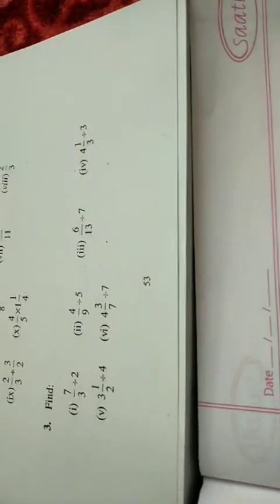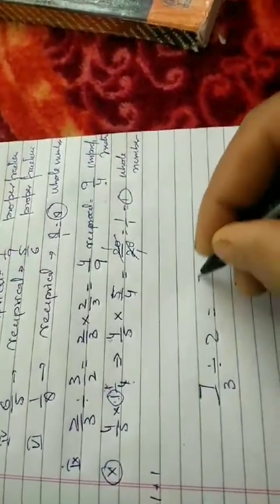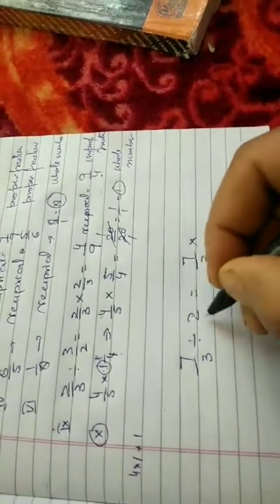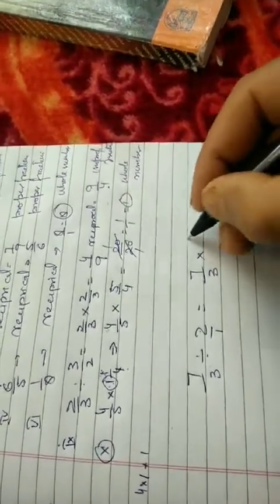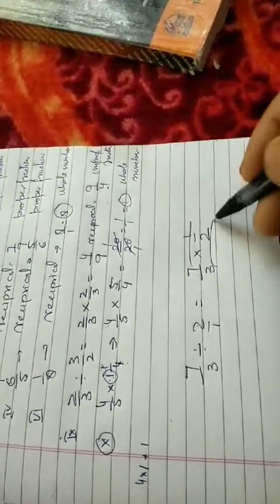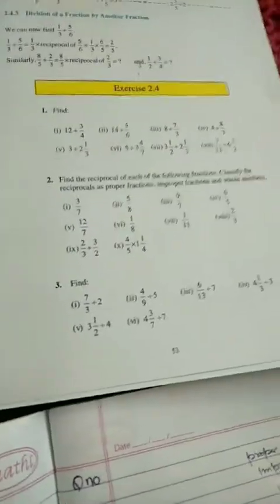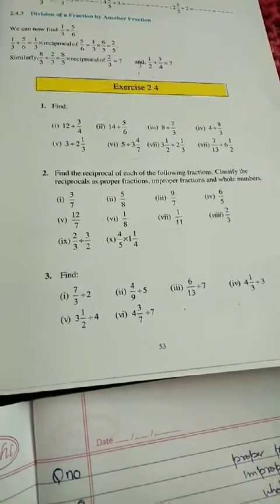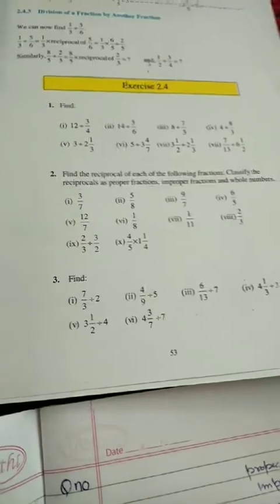This completes question number two. Question number three: find 7 by 3 divided by 2. For example, 7 by 3 divided by 2 by 1. If you understand, follow the previous videos. Thank you.